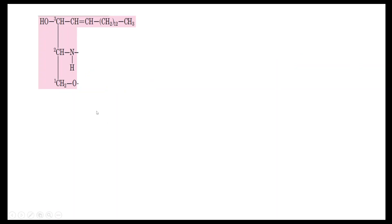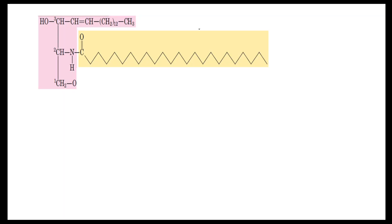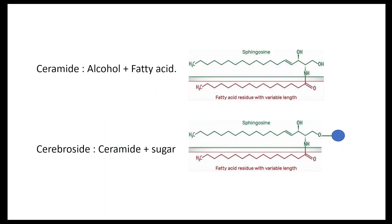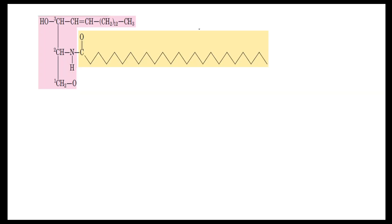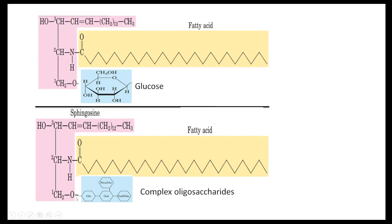To revise: sphingosine plus a fatty acid is a ceramide. A ceramide plus a carbohydrate is a cerebroside. A cerebroside with complex carbohydrates is a globoside. A globoside containing N-acetylneuraminic acid is a ganglioside.